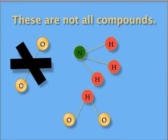Ammonia, NH3, and water, H2O, are made of different types of atoms. Therefore, they are considered compounds.